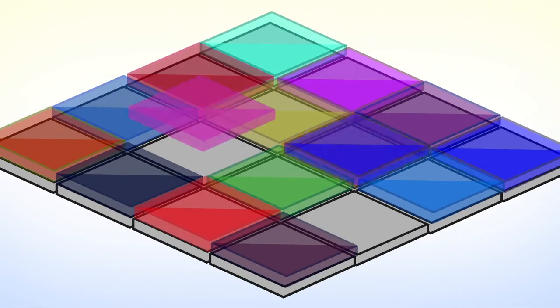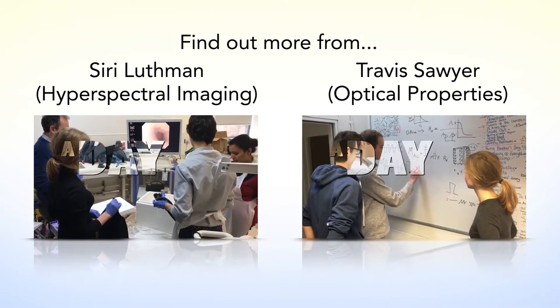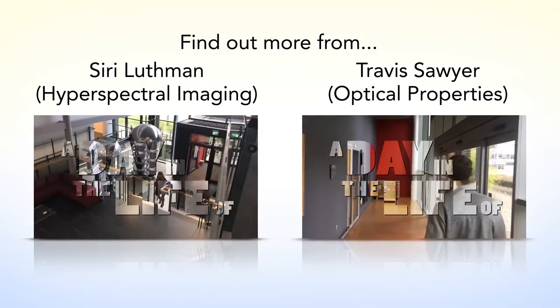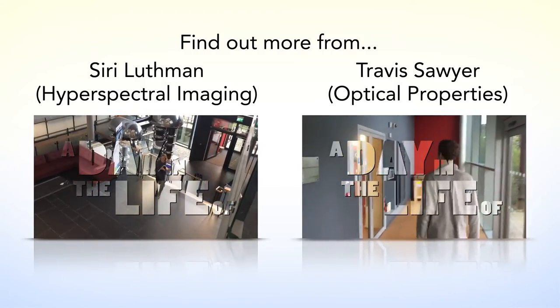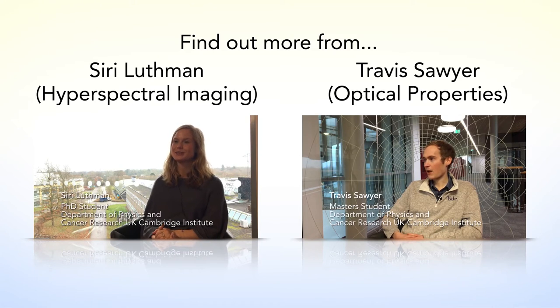With hyperspectral imaging we just take this one step further — we apply 10, 20, or 100 filters, and that means the final image then has 10, 20, or 100 colours. That's a hyperspectral image. I'm Siri, and I'm a PhD student in the Vision Lab Group at the University of Cambridge.